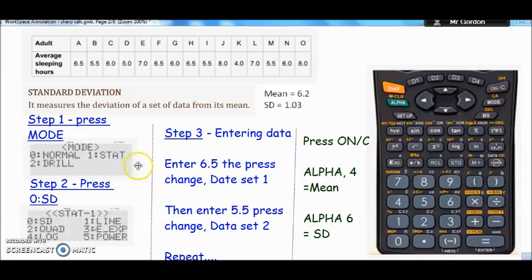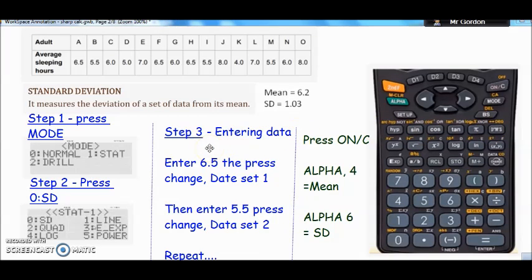So you press MODE and it will bring you to this screen and you want the stats function, so on this model it's 1 for STAT, press 1, and then you're going to work out the standard deviation, so that's the 0 option here, the SD, so press 0. And then start entering the data. You just type in 6.5 and then you have to press this button here, CHANGE, and that enters the data into the calculator and it will come up with data set 1. Then you type in the next piece of data, so 5.5 and press CHANGE, and it will say data set 2, and you repeat this process, keep repeating it until all the data has been entered.